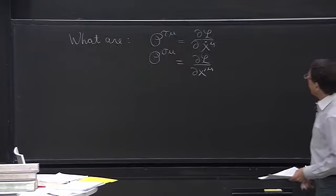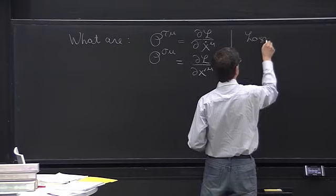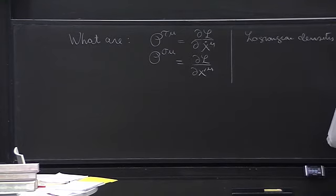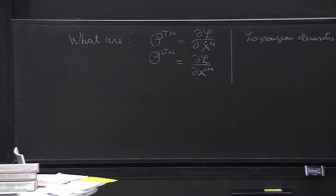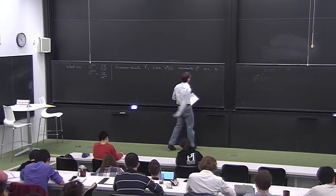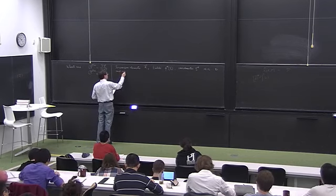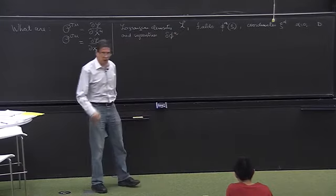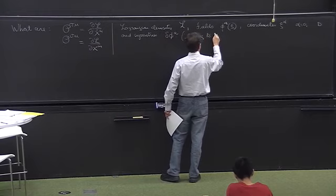Let me remind you of Noether's theorem. If you have a Lagrangian density L depending on fields φ_A and coordinates ψ^α (with α from 0 up to some number D), and symmetry transformations δφ_A leading to δL = 0 — that's a narrow definition of a symmetry, leaving the Lagrangian invariant — then you have conserved currents.